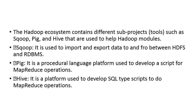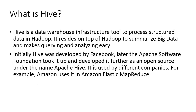The Hadoop ecosystem contains different sub-projects or tools such as Sqoop, Pig, and Hive, and they are used to help the Hadoop modules. Sqoop is used to import and export data to and from between HDFS and RDBMS. Pig is a procedural language platform used to develop scripts for MapReduce operations, and Hive is a platform used to develop SQL-type scripts to do MapReduce operations. Hive is a widely used tool for big data analytics and a great tool to start your big data career with.